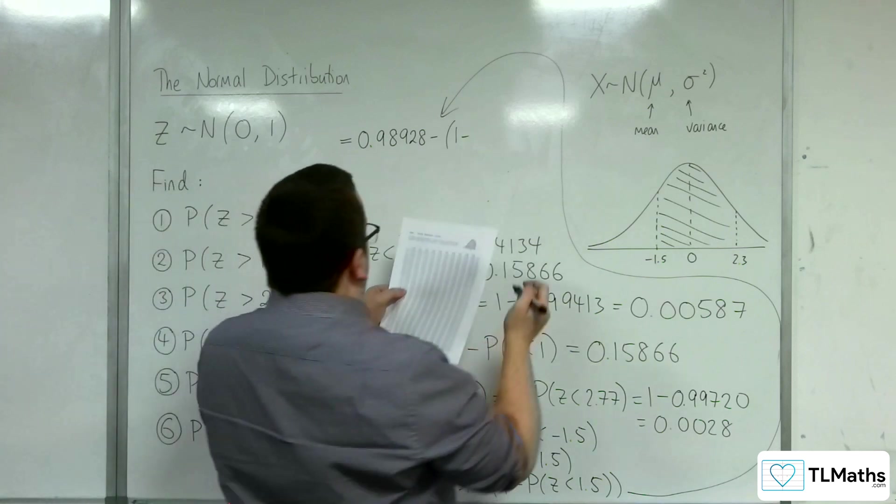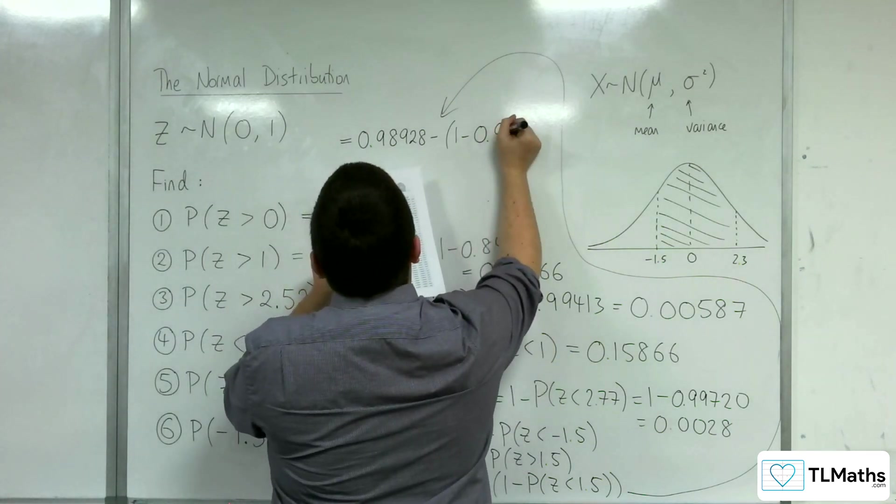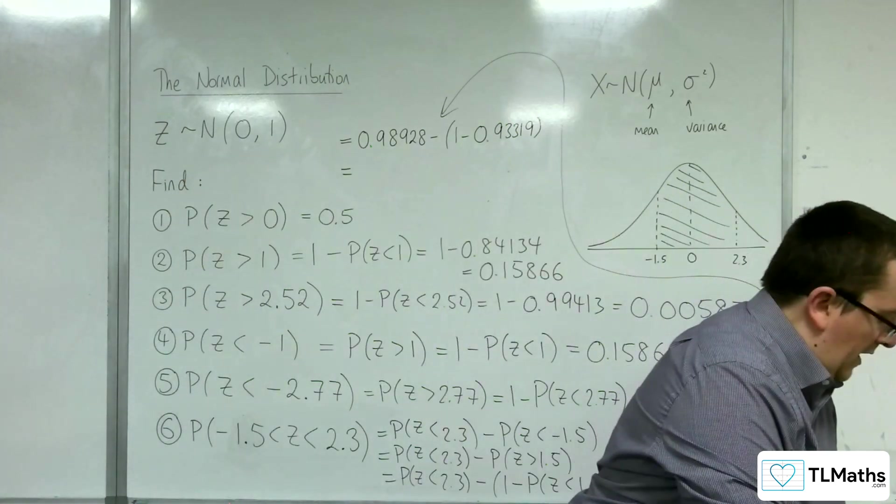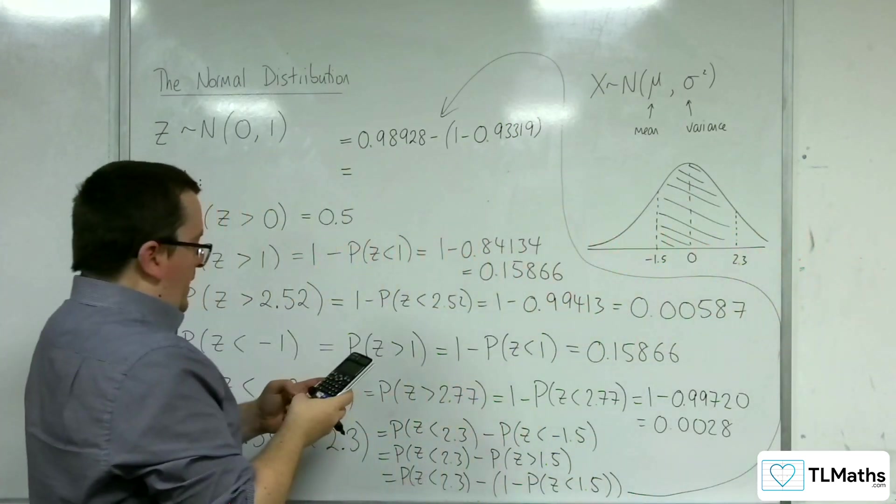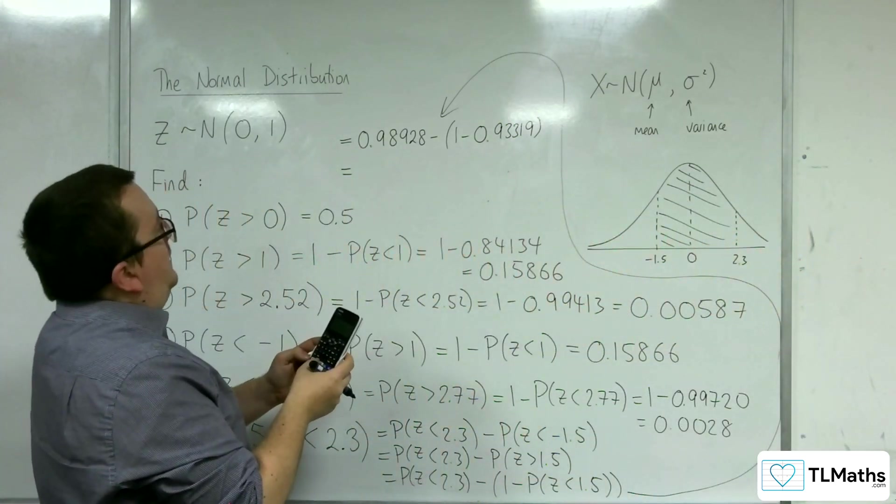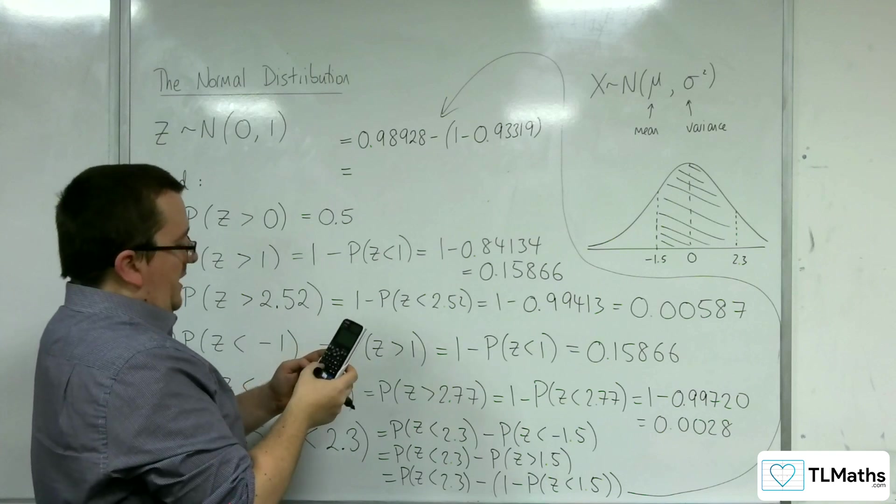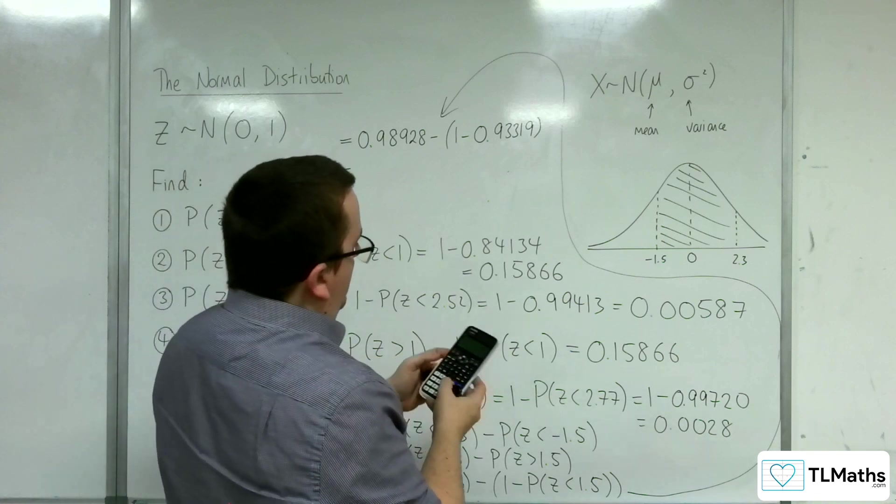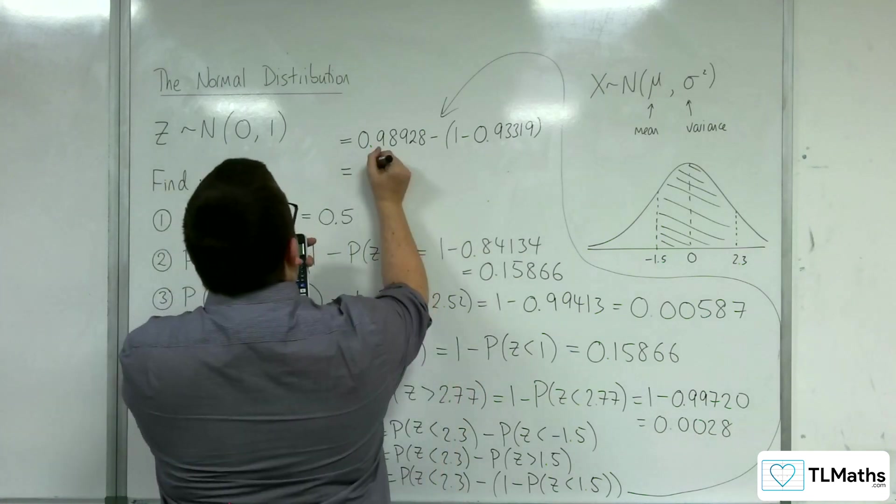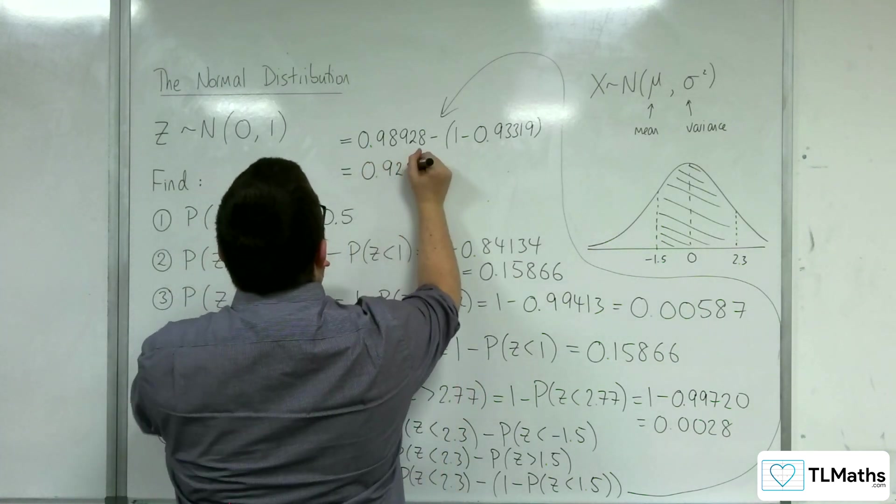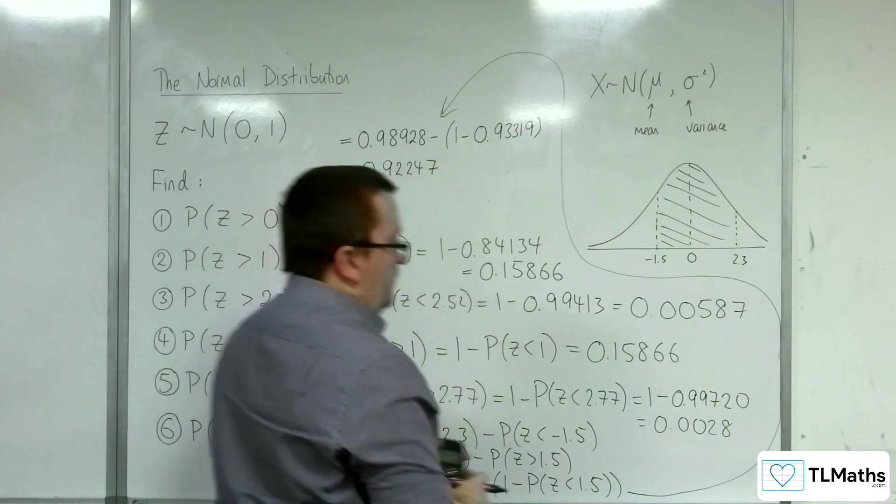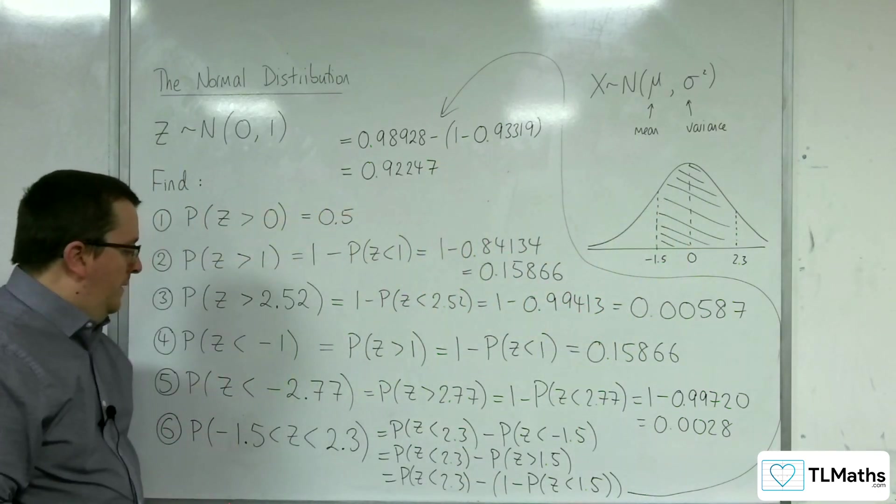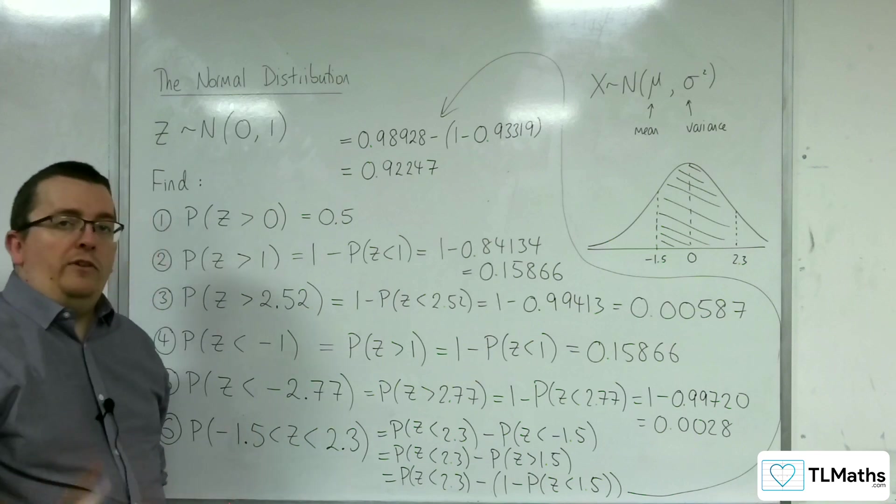So I'm running out of space, so I'm going to have to go all the way up here. So the probability of Z being less than 2.3, I can look that up in my calculator, so that's 0.98928. And I've got 1 take away the probability of Z being less than 1.5, so 0.93319. So let's do that on the calculator: 0.98928 take away, open bracket, 1 take away 0.93319, and that leaves me with 0.92247. And so that's how we can find the probability for number 6 using our tables.